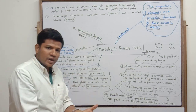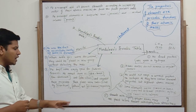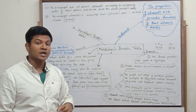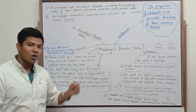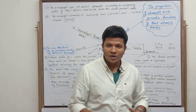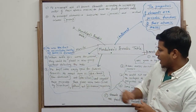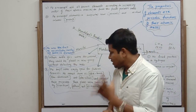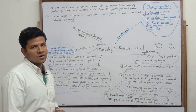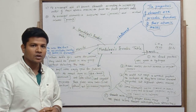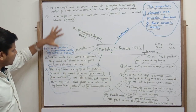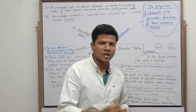Later, in the future, three elements were discovered: scandium, gallium, and germanium. The properties of scandium were very similar to what Mendeleev had predicted for eka-boron, so scandium filled the space of eka-boron. Gallium's properties matched eka-aluminium, and germanium's properties matched eka-silicon. So germanium filled the space of eka-silicon. These accurate predictions made Mendeleev so successful — these were the merits of Mendeleev's periodic table.